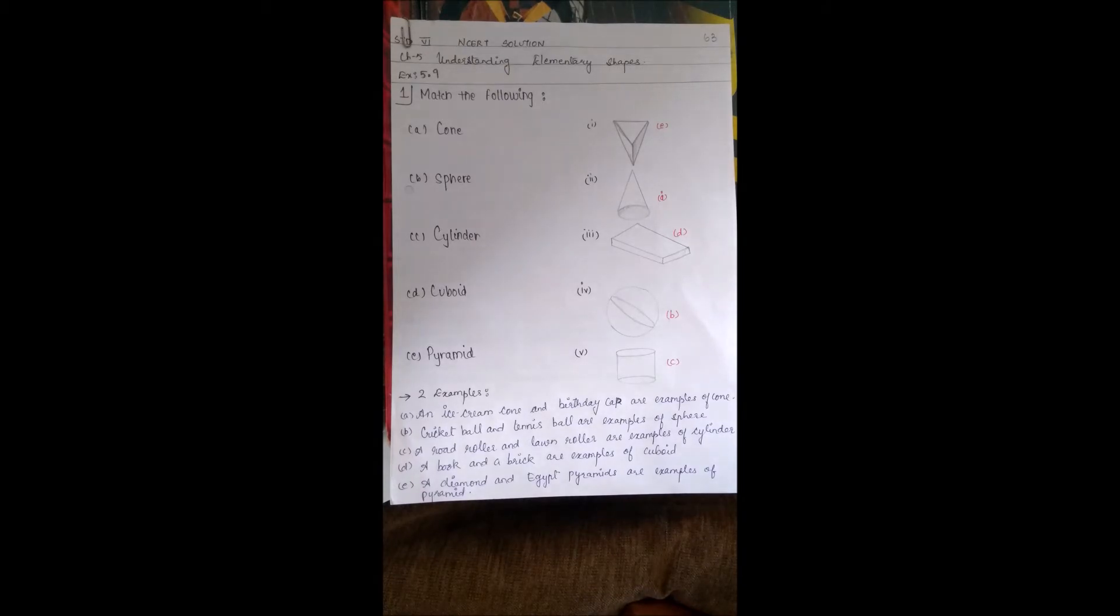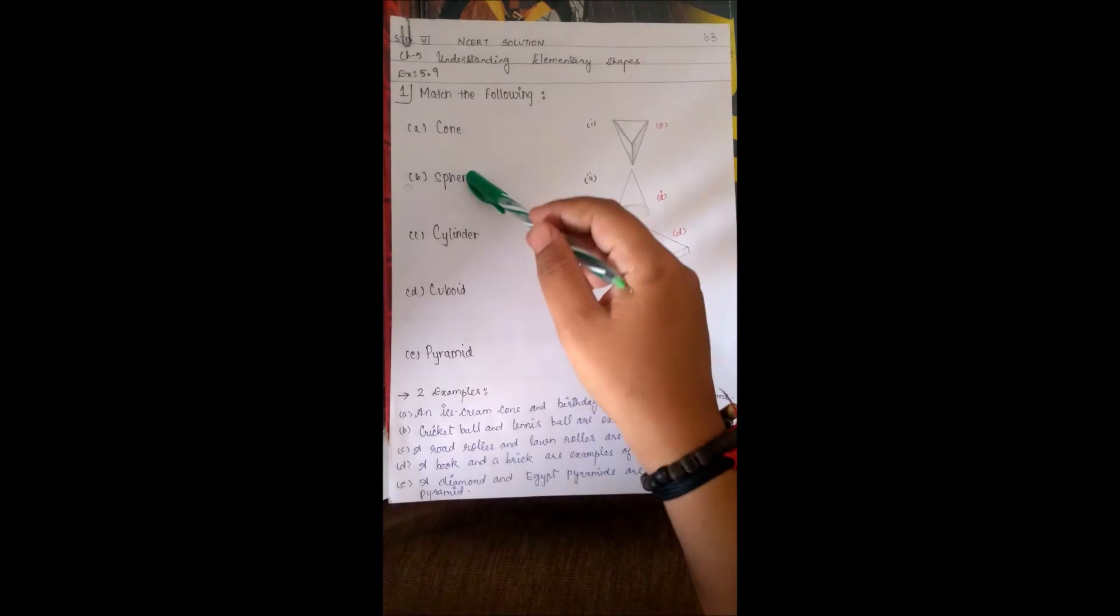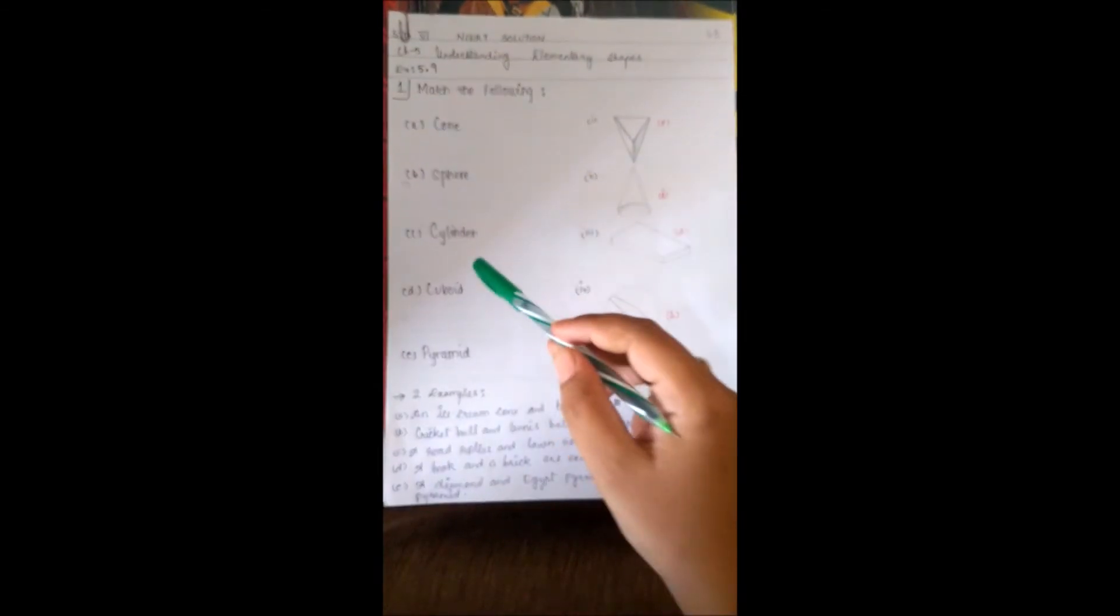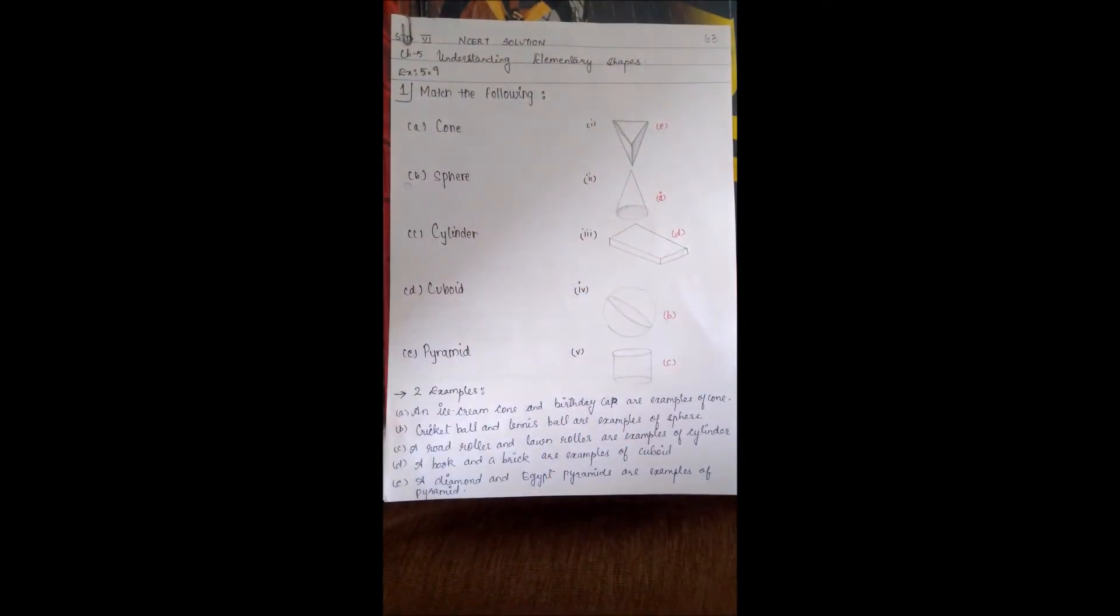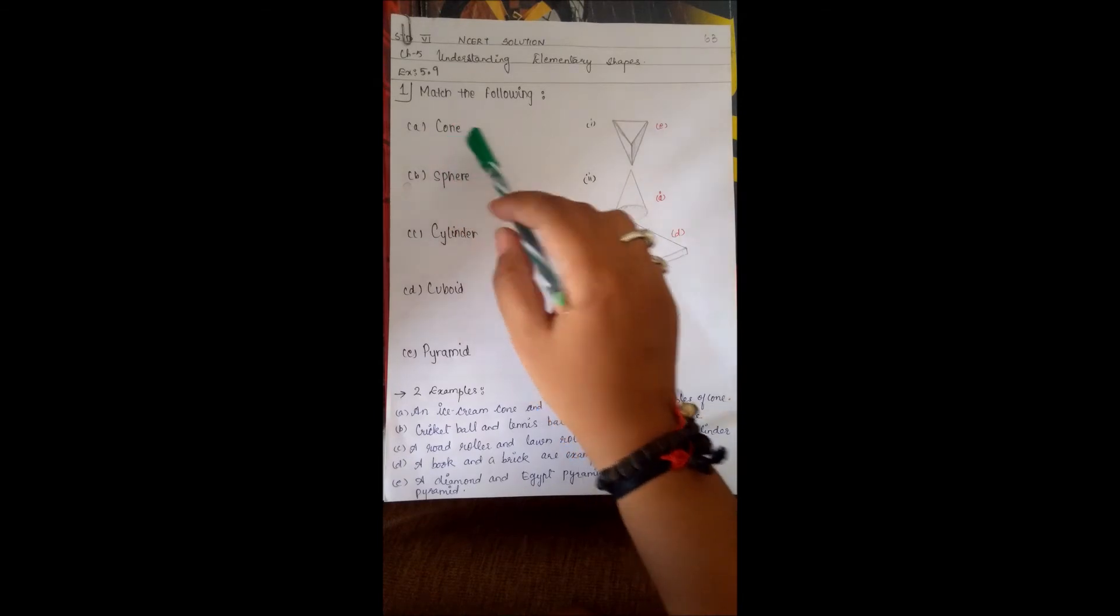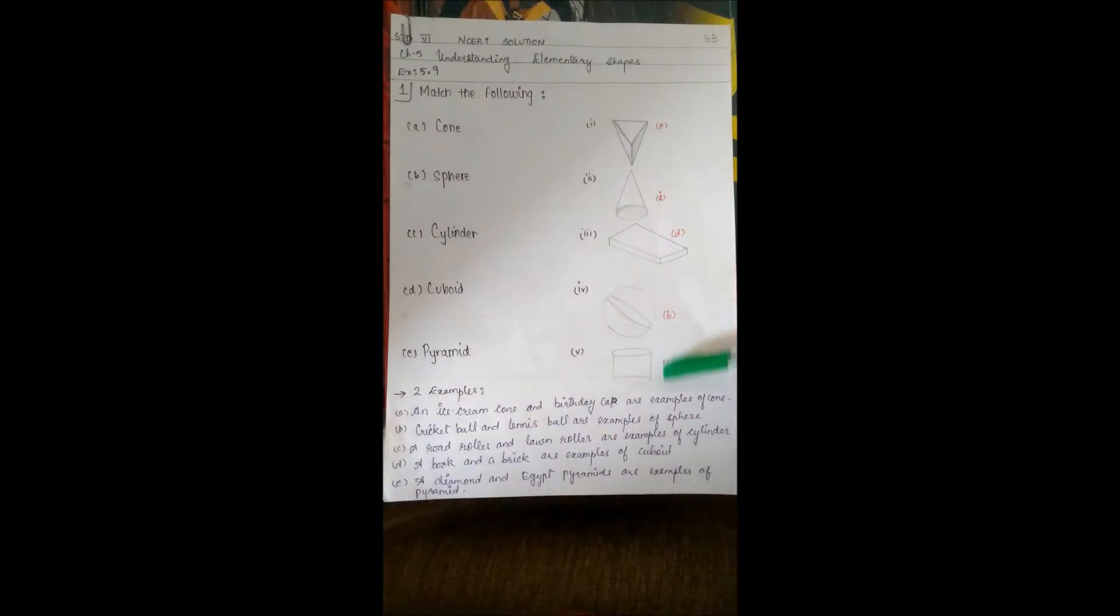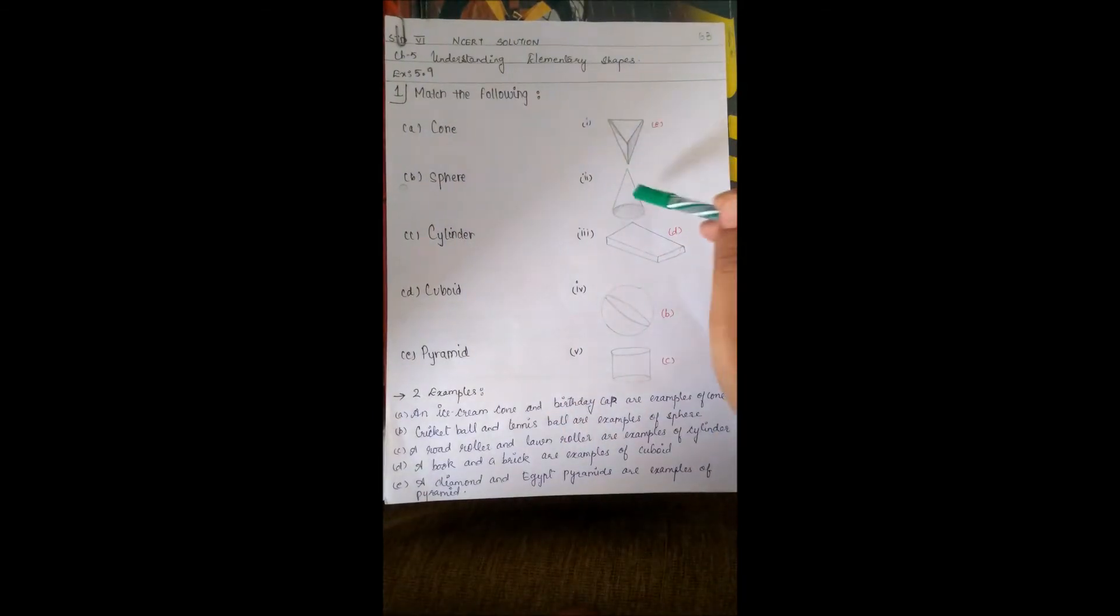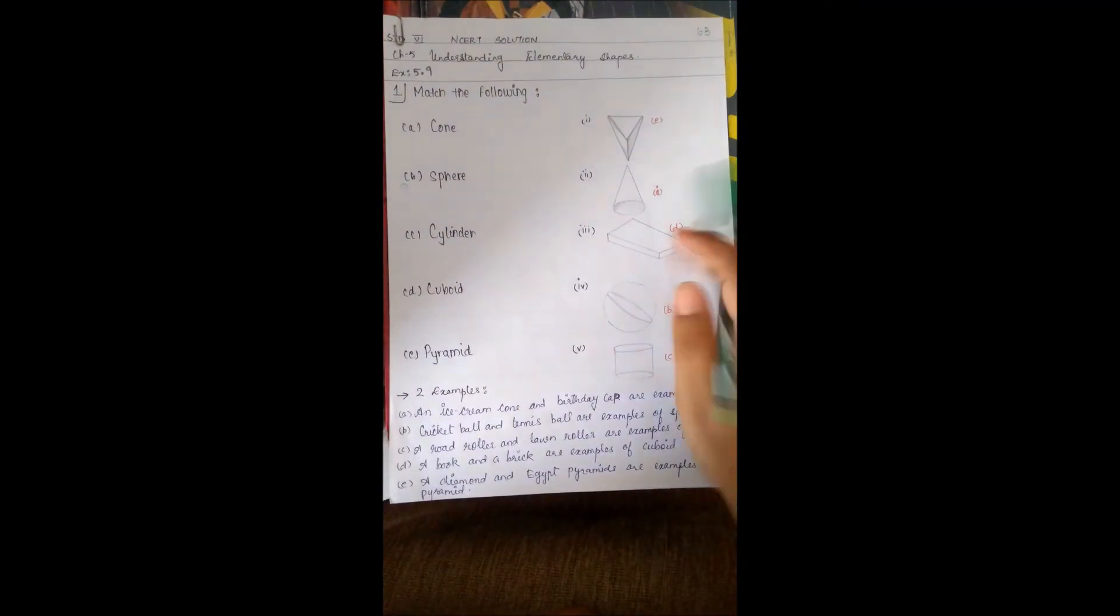will see Exercise 5.9. The first question is match the following. In column A, it is given: cone, sphere, cylinder, cuboid, and pyramid. These are the shapes given in column B. So cone - we can see the cone from here - this is the cone. Sphere - which is the sphere?